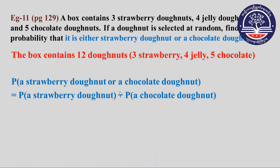We have the probability of strawberry which is 3/12, plus the probability of chocolate which is 5/12. So the answer is 3/12 plus 5/12.